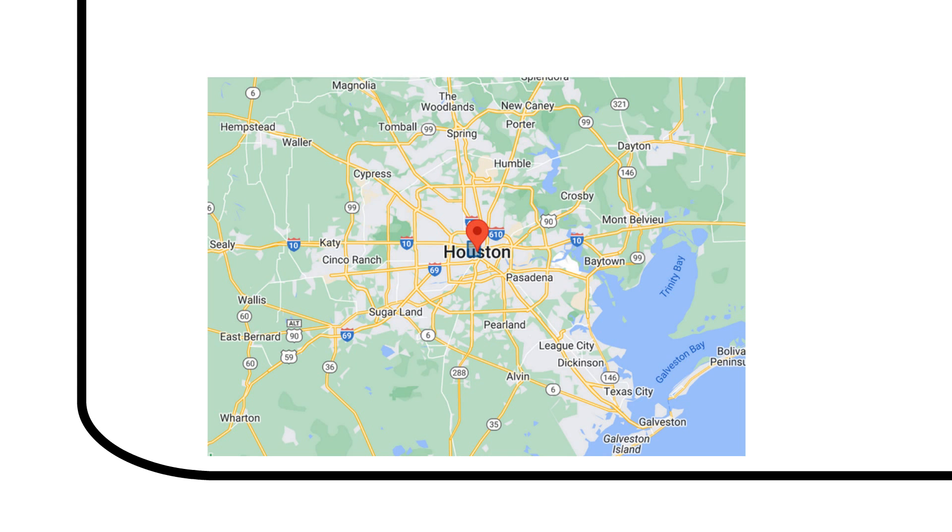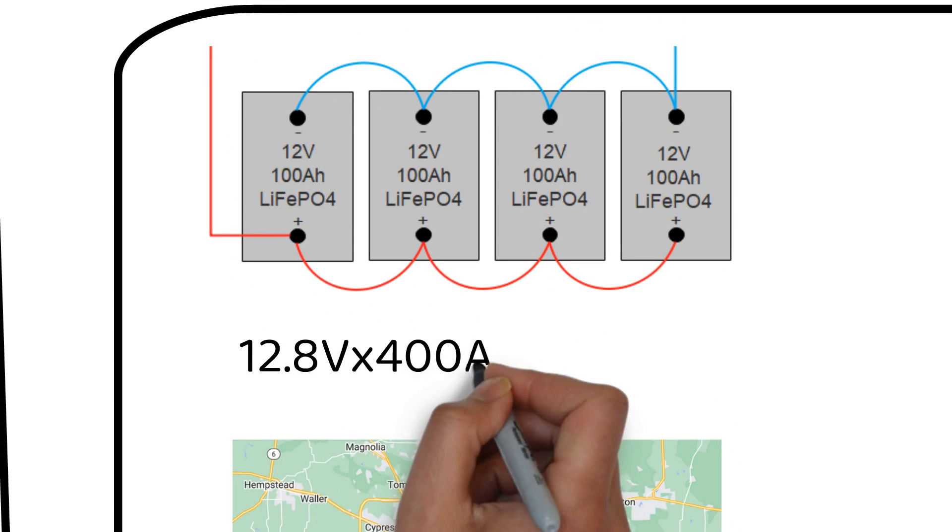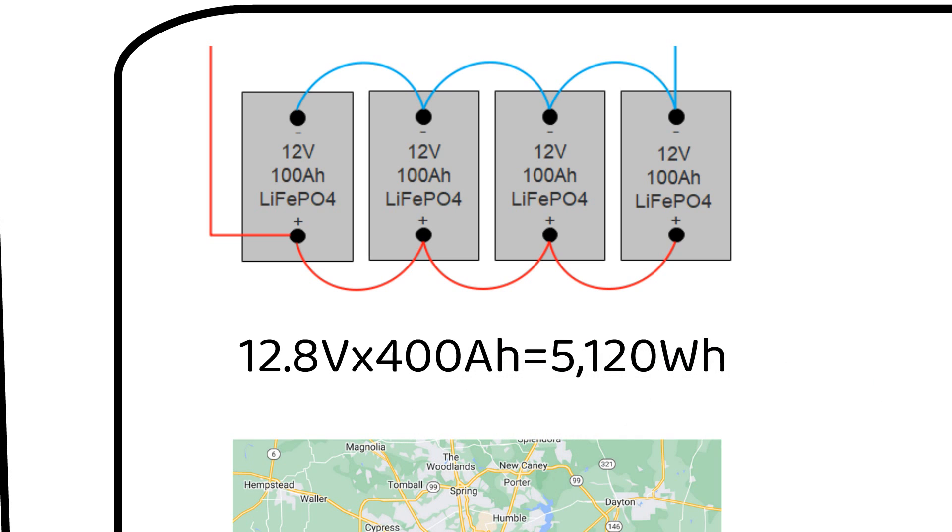First let's determine the total power capacity of the battery. We are looking at 5120 watt hours of energy storage. The next step involves assessing the solar potential in Houston particularly during the winter months because these are the months with the least amount of sunlight.